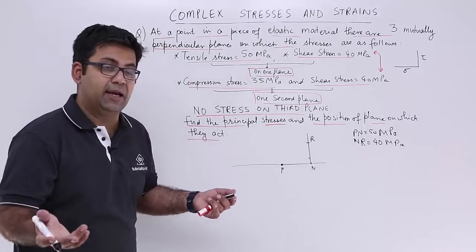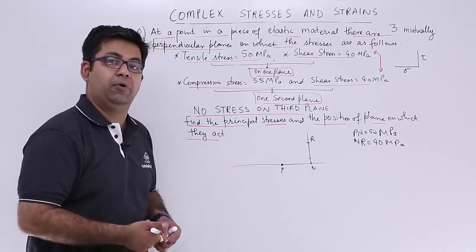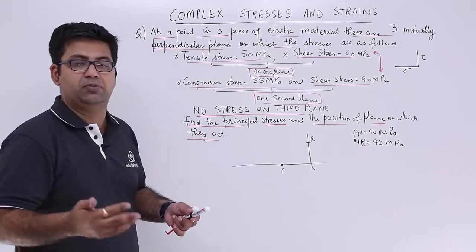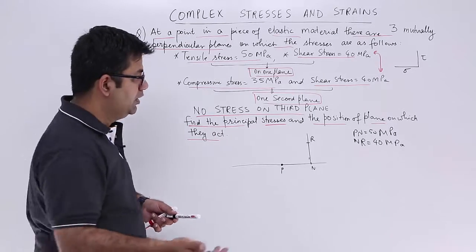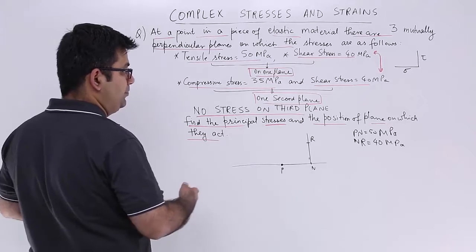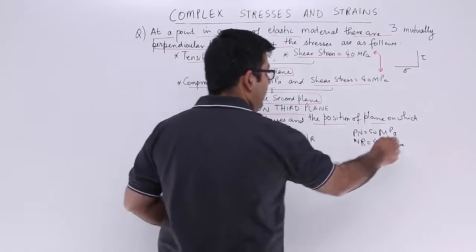So this is representing the stress. I will write down 50 MPa and 40 MPa. If you are taking that scale then 50 MPa would be equal to 50 mm, that is 1 MPa equal to 1 mm. So you can take the scale as per your convenience. So this is for one plane.